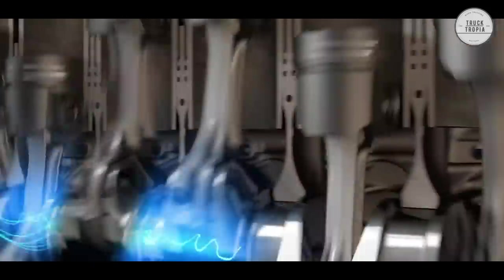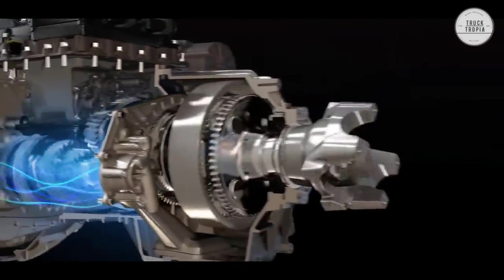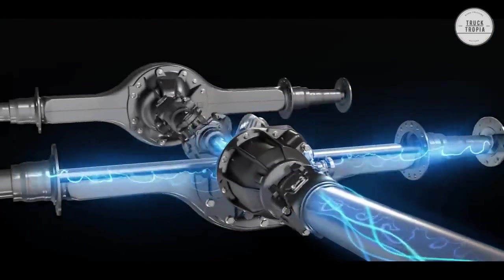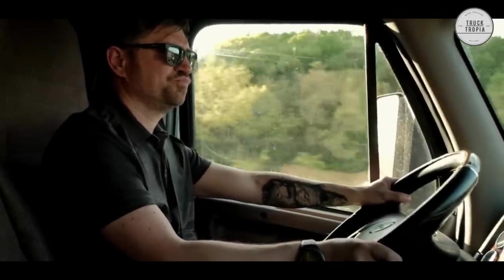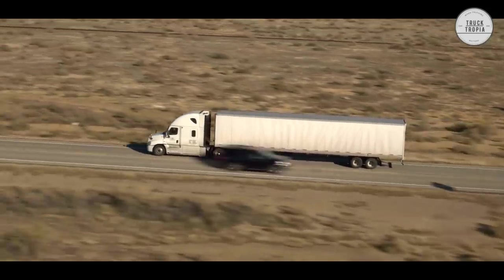The gears in the transmission work by controlling the power from the engine to the wheels. When the driver shifts gears, the gear ratio in the transmission changes, which allows the engine to rotate at a different speed compared to the wheels. This changes the vehicle's speed and torque, which is the turning force of the wheels.